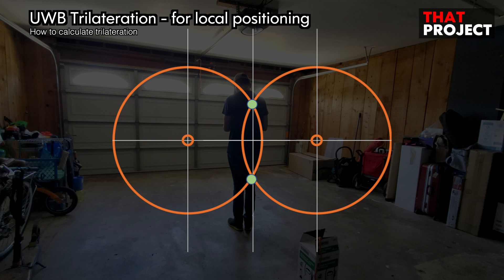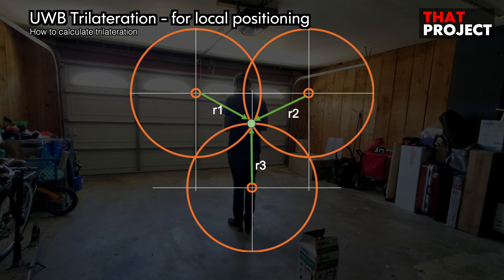It is not possible to pinpoint a user's location with only two anchors with a much higher probability. If one more anchor is added, a point where the three circles intersect will be created and the location of the tag can be clearly specified.